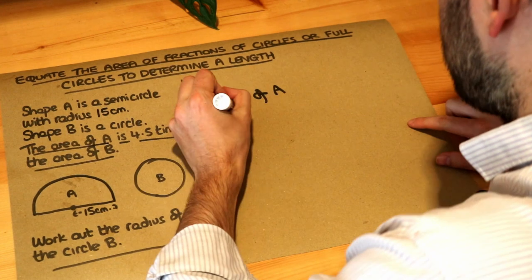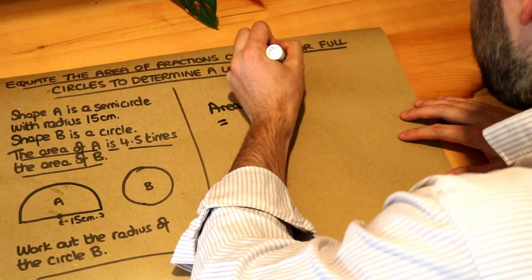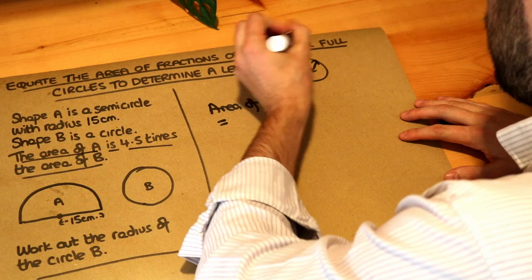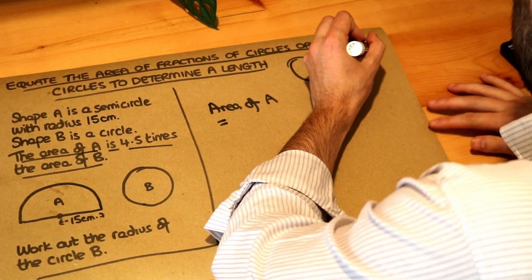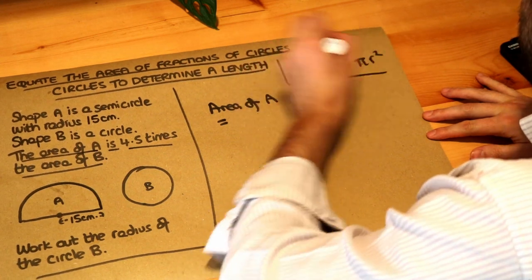Now remember what the area of a full circle is. If we have the radius of the circle R, then the area is equal to π times the radius squared. So we're going to need to use that formula.